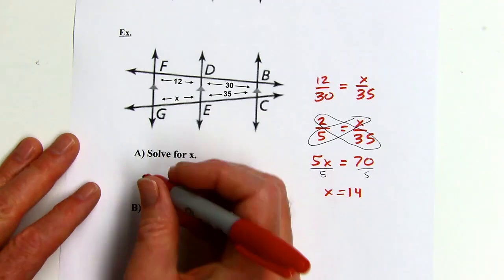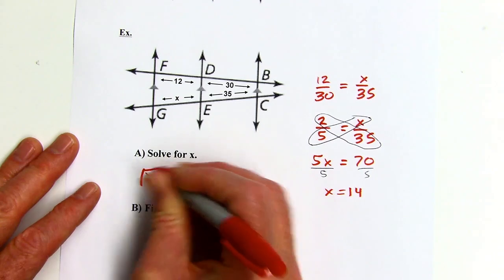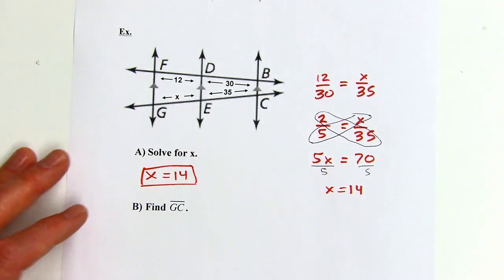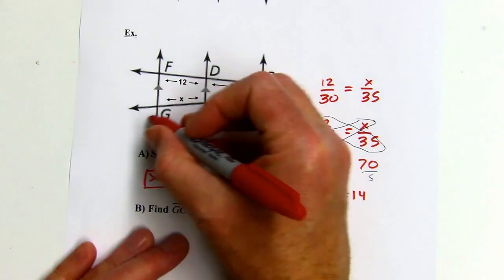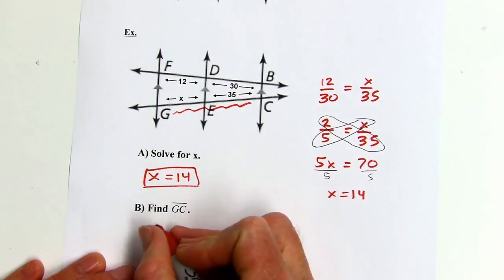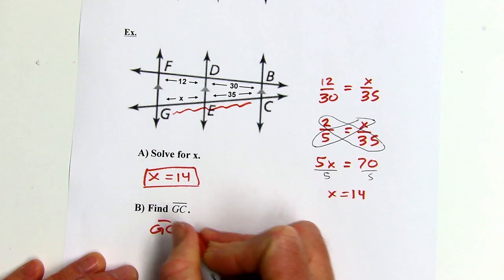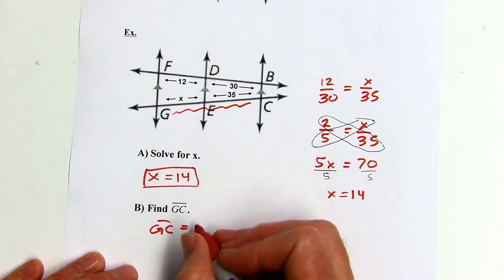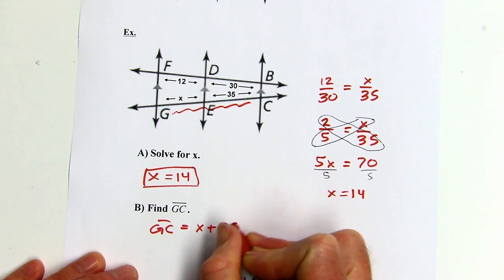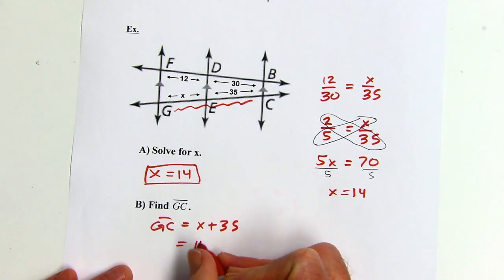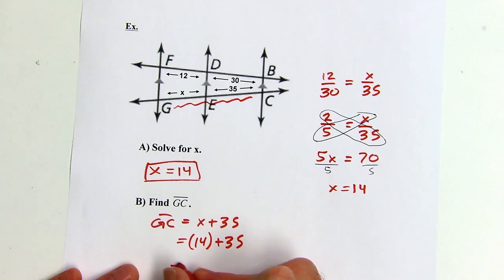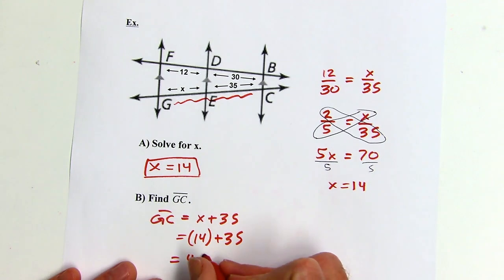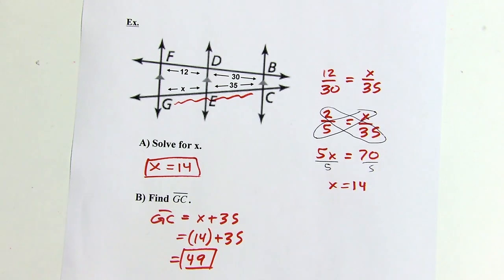Now that we have x equals 14, part b asks for the length of GC. GC is x plus 35. Substituting x equals 14 gives 14 plus 35, which equals 49. That's the end of the section — see you next time.